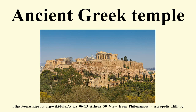Greek temples were designed and constructed according to set proportions, mostly determined by the lower diameter of the columns or by the dimensions of the foundation levels. The nearly mathematical strictness of the basic designs was lightened by optical refinements. In spite of the still widespread idealized image, Greek temples were painted, so that bright reds and blues contrasted with the white of the building stones or stucco. The more elaborate temples were equipped with very rich figural decoration in the form of reliefs and pedimental sculpture.